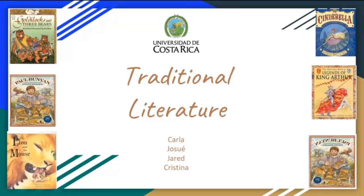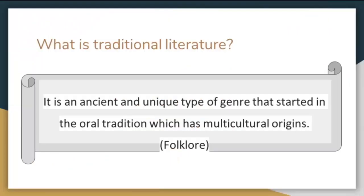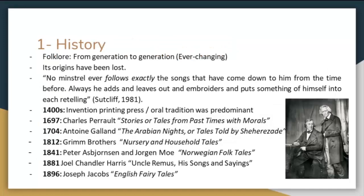Hello class. Today, Karla, Jarekriza, and myself will be presenting to you what traditional literature is, where we will talk about its main characteristics. To start off this presentation, we will cite a little definition for you. As it says in the definition, it is an ancient and unique type of genre that started in the oral tradition, which has multicultural origins — folklore. Folklore is basically similar to traditional literature; these two terms are very alike. To start diving deeper into this presentation, we will start with its history.